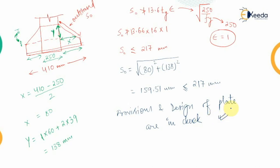Our designing process is correct. This completes the design of the gusseted base through bolted connection. In the next class, we will see the connection of the gusseted base through welding.